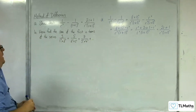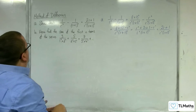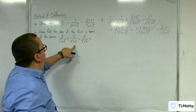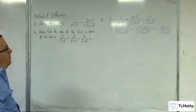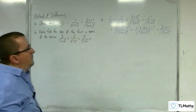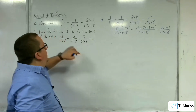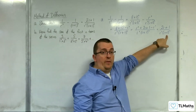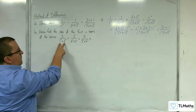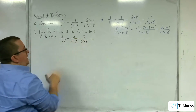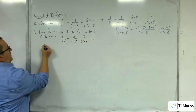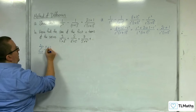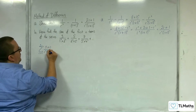Part B: hence find the sum of the first n terms of the series 3 over 1 squared times 2 squared, plus 5 over 2 squared times 3 squared, plus 7 over 3 squared times 4 squared, and so on. You'll notice these terms have a very similar structure. This is when r is 1, this is when r is 2, this is when r is 3, etc. So this series is the same as the sum from r equals 1 to n of 2r plus 1 over r squared times r plus 1 squared.